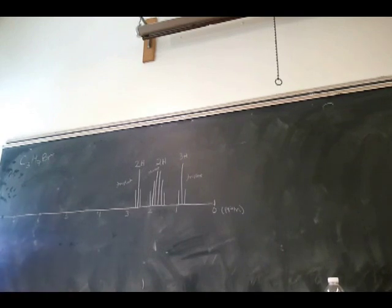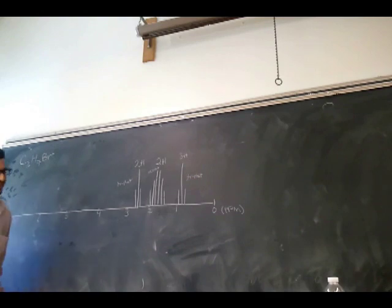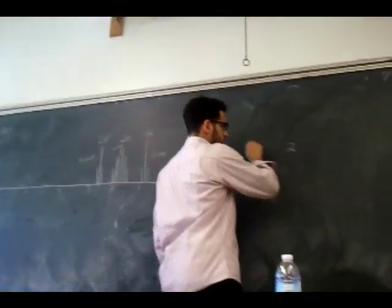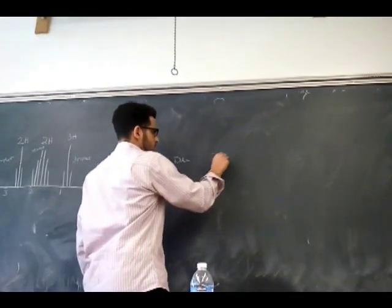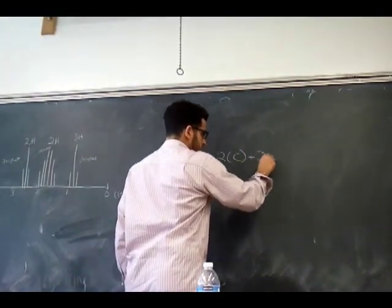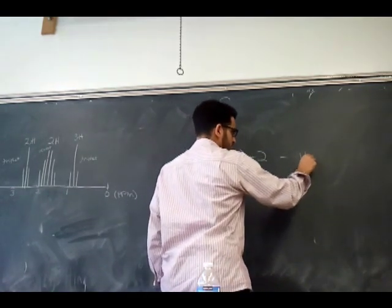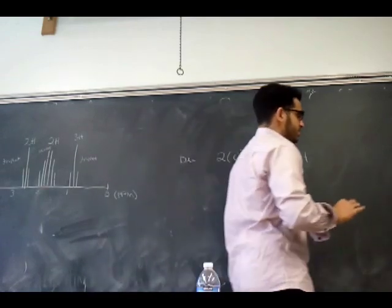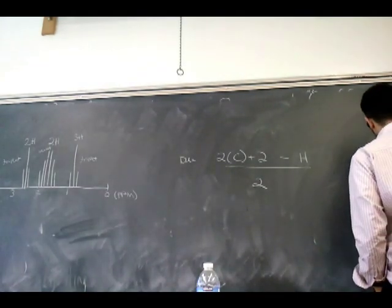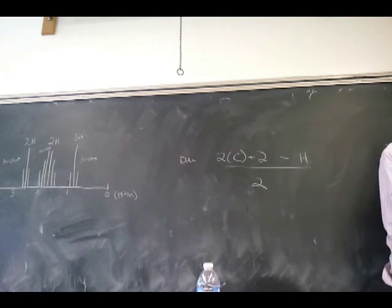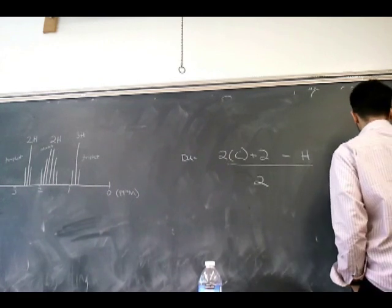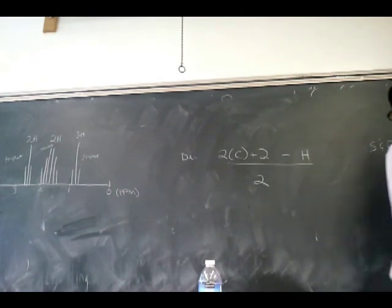Do you guys know how to calculate degree of unsaturation? Okay. So how you calculate the degrees of unsaturation is two times the number of carbons plus two minus the number of hydrogens, divided by two. There's some exceptions. If you have oxygen, you ignore oxygen. Ignore. You want to double check this. Oxygen and sulfur, you ignore.